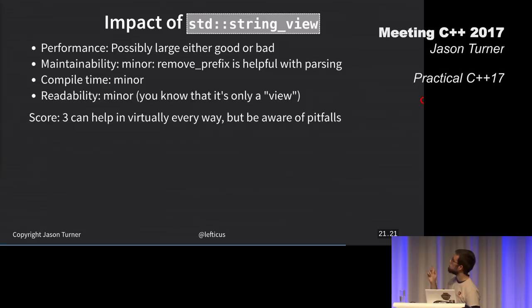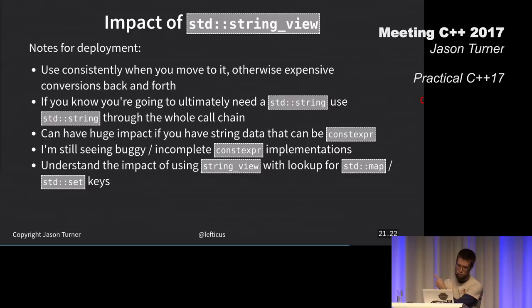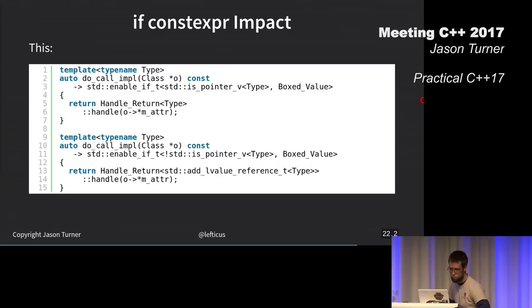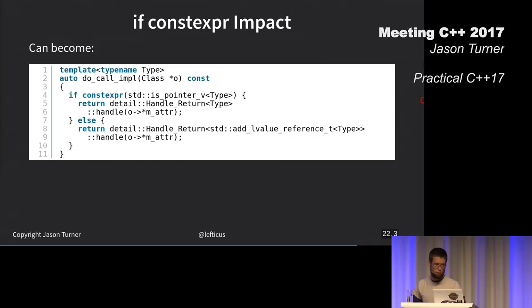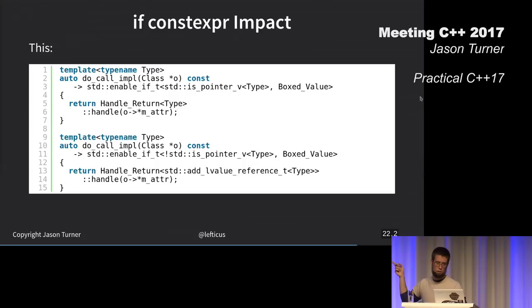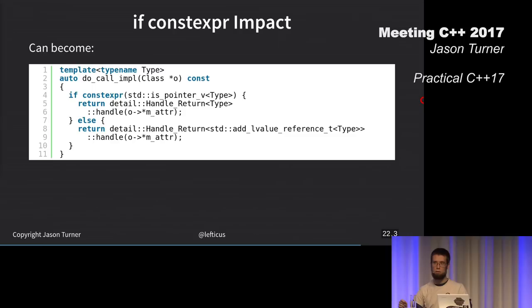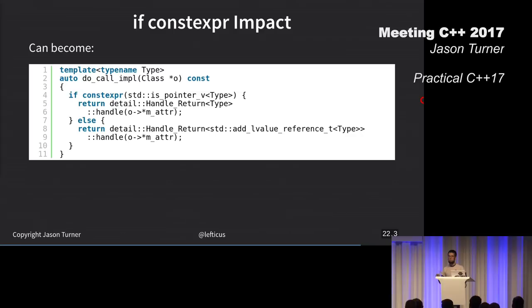If constexpr is great. I was able to go from code that looks like this, with SFINAE, to code that doesn't use SFINAE. Who likes SFINAE? Good answer, everyone. But it did not eliminate 100% of my SFINAE usage. Does anyone want to yell out why it did not?